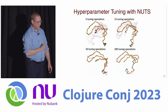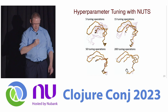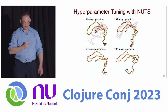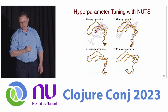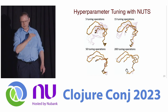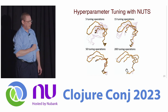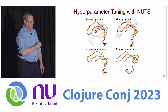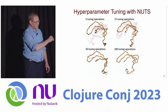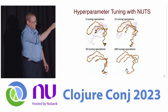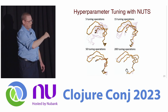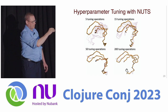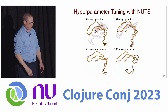This demonstrates how you need to vary the number of NUTS tuning steps in order to reach convergence. Initially, our samples from the posterior distribution don't agree well with the reference structure, but as the number of tuning steps increases, we get very good agreement.